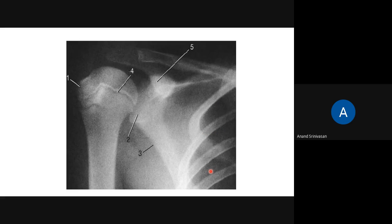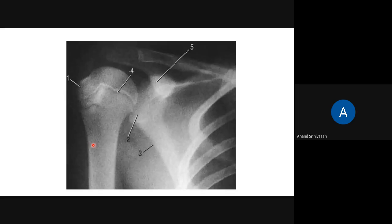Is it right or left? Usually in any X-ray it will be indicated. But here in this X-ray, it's not been indicated. In any X-ray, if you see, there will be a hospital code or number, and it will be written as R or L - right or left. Here it's been removed, so it's not seen.